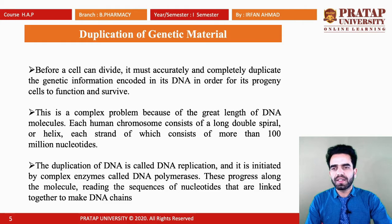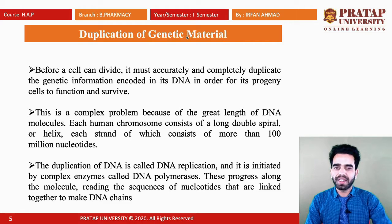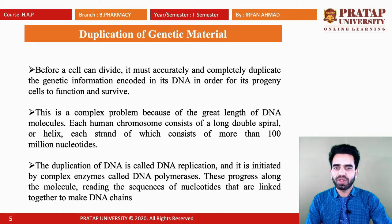Next we study the duplication of genetic material. In the case of viruses the genetic material is RNA, but in multicellular organisms the genetic material is mostly DNA — deoxyribonucleic acid. Before a cell can divide it has to duplicate its genetic material accurately and completely, because all the information is encoded in that DNA. A cell duplicates its genetic material by the process of replication.